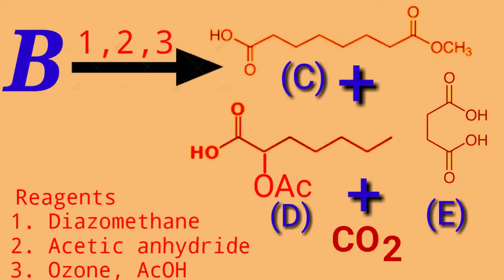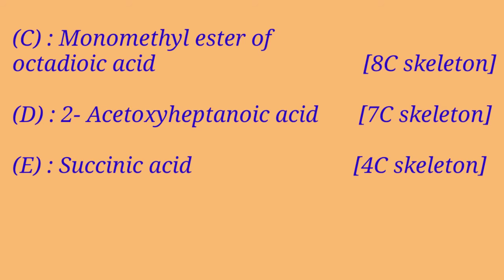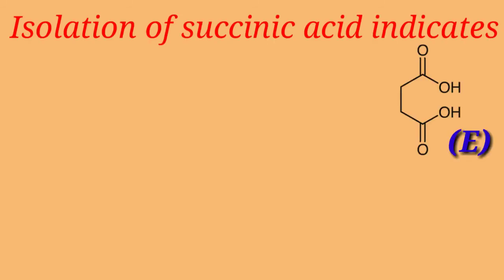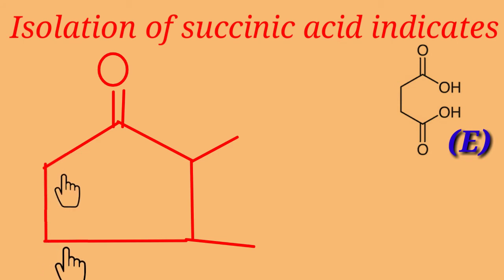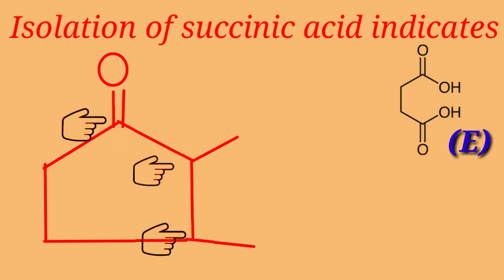When compound B was allowed to react with diazomethane, acetic anhydride, and ozone in the presence of acetic acid, it yielded compounds C, D, E, and carbon dioxide. Compound C is the monomethyl ester of octadioic acid, compound D is 2-acetoxyheptanoic acid, and compound E is succinic acid. All three compounds account for only 19 carbon atoms. Isolation of succinic acid showed the presence of 2 vicinal methylene groups in the cyclopentane ring, and also suggests that the 3 carbon atoms bearing the 2 side chains and a keto group must be adjacent to each other.